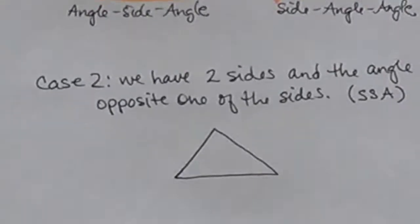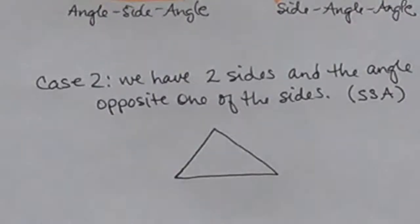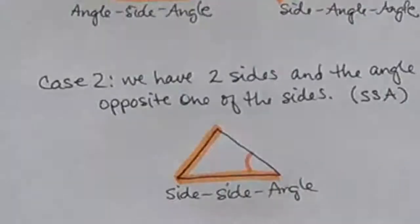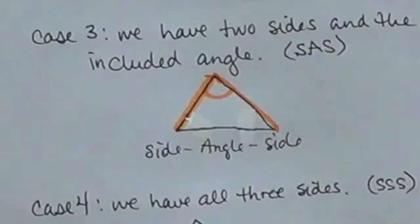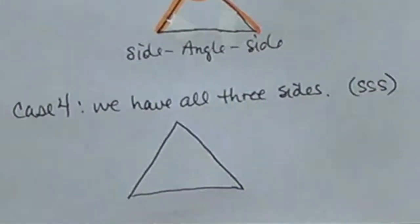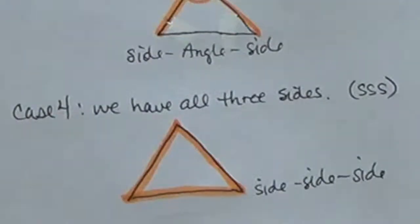In the second case, we have two sides and the angle opposite one of those sides. So if I know sides b and c, then I have angle b or c — this is side-side-angle. In the third case, we have two sides and the included angle, which is a little different from side-side-angle; it's the angle that corresponds to the side we don't know. And in the last case, we're just given all three sides, known as side-side-side.